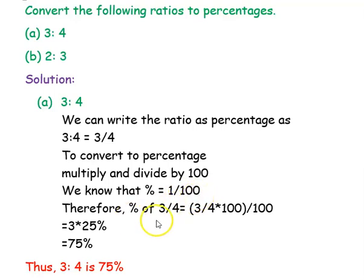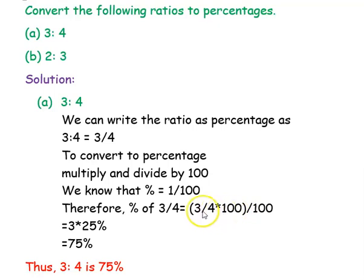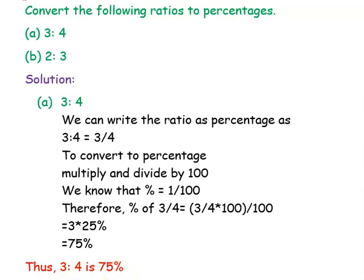Therefore, the percentage of 3 divided by 4 is 3 divided by 4, into 100, into 1 divided by 100. The divided by 100 is for percentage. Now, 3 divided by 4 into 100 is nothing but 3 into 25. This 1 by 100 will become the percentage symbol. So 3 into 25 percentage is nothing but 75 percentage. Thus, 3 is to 4 is 75 percentage.